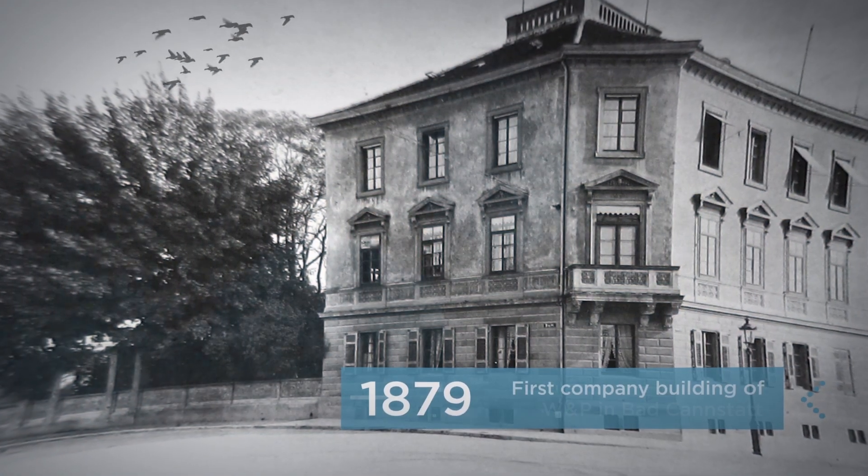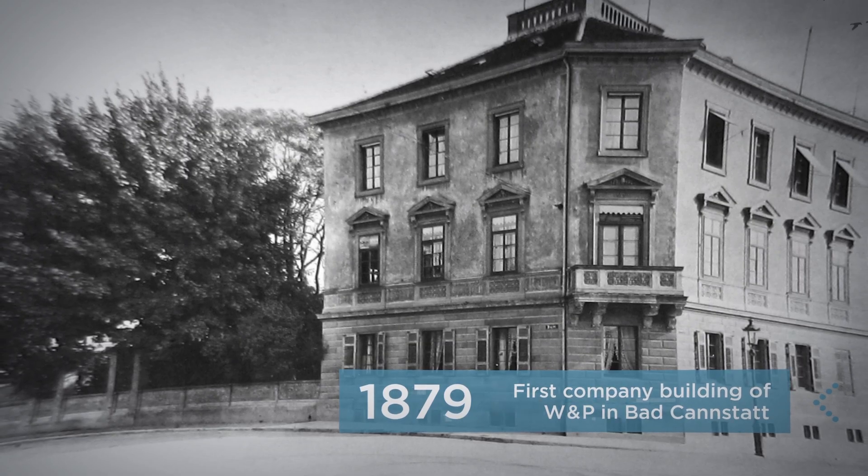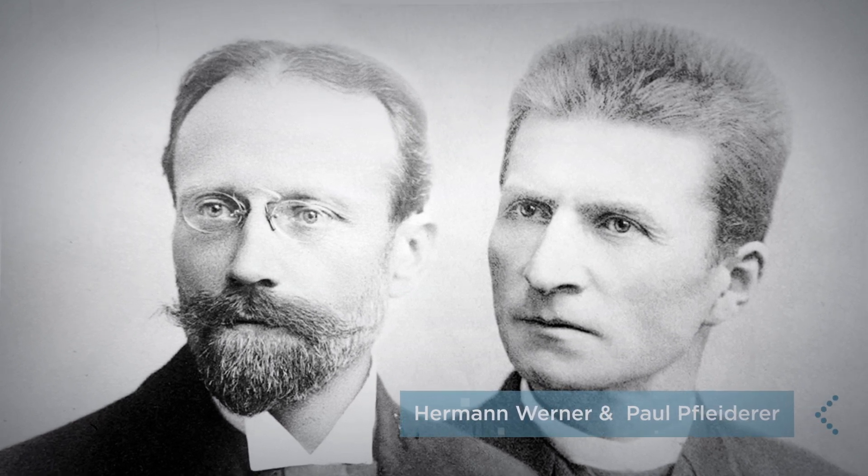Paul Flederer opened a machinery production workshop in 1879 together with Hermann Werner, a friend from university. Right from the early days, Werner and Flederer specialized in manufacture of kneading and mixing machines for the baking industry.